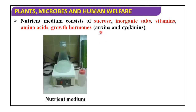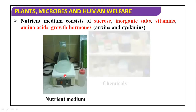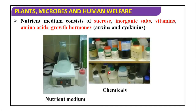We require a nutrient medium in this tissue culture technique. It consists of sucrose, inorganic salts, vitamins, amino acids, and growth hormones. The plant growth hormones are auxin and cytokinin, which are helpful in the growth of shoot and root. This is our nutrient medium, and these are the chemicals.